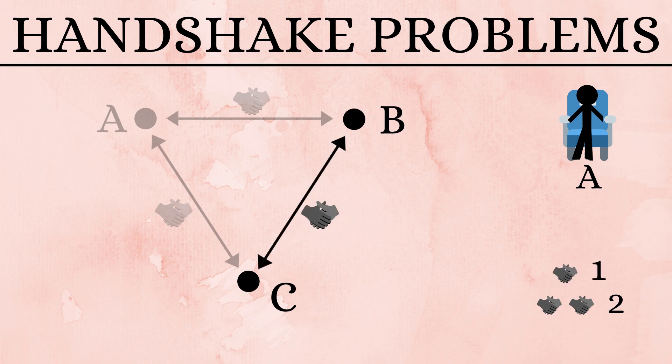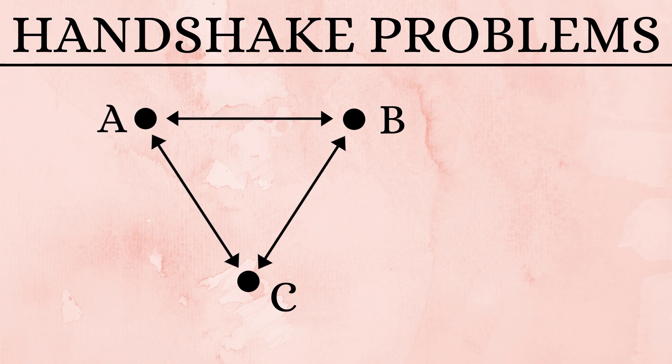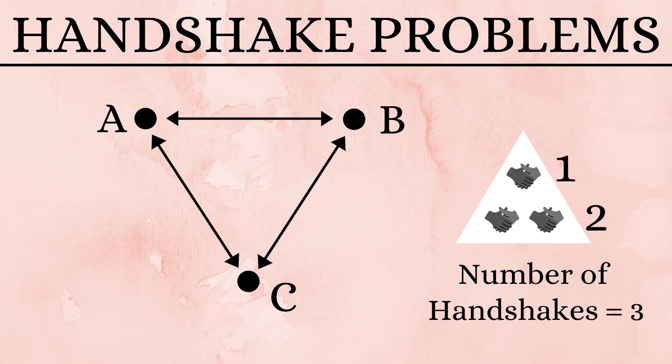So one more handshake has to be done between B and C. Now all three people have shaken hands with each other. So for three people, we have a total of three handshakes.